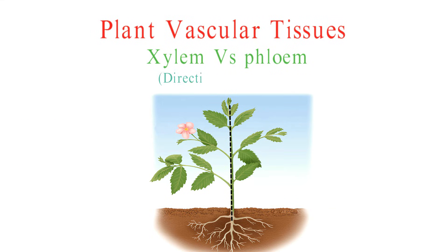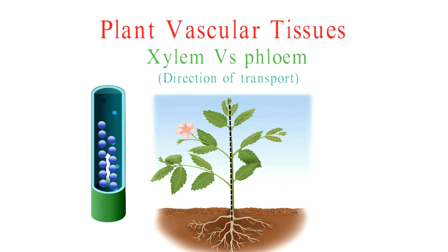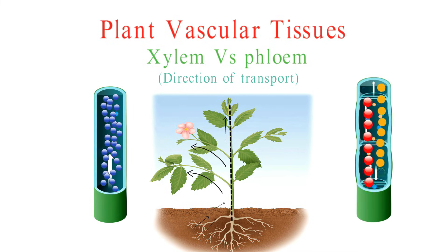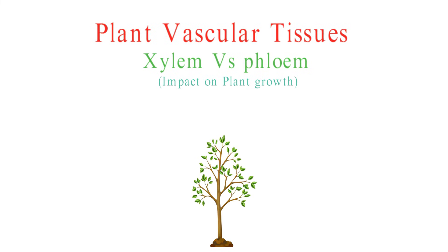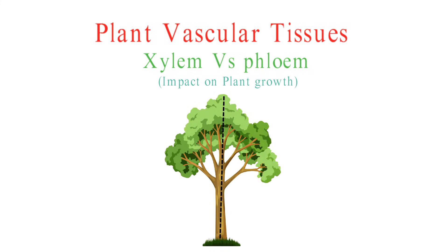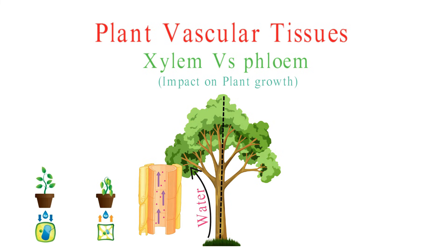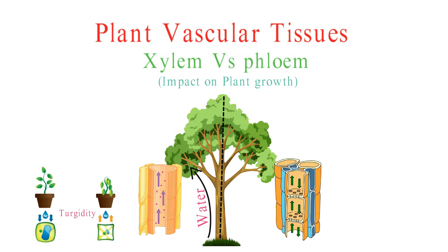Another significant difference is the direction of transport. Xylem primarily transports water and minerals upward, from the roots to the leaves — so it's a one-way flow — while phloem transports organic compounds in both directions, up and down the plant. Xylem's role in water transport is crucial for maintaining turgidity and supporting the plant's structure, while phloem's transport of sugars and nutrients is essential for growth, reproduction, and energy production.